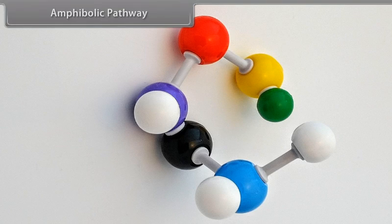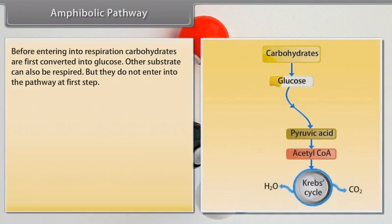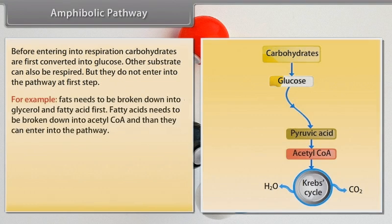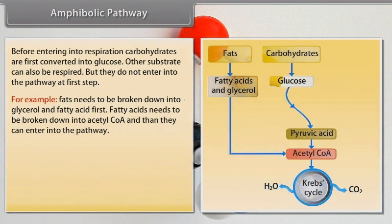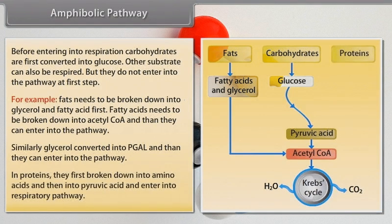Generally, carbohydrates are used as substrates for respiration. Before entering into respiration, carbohydrates are first converted into glucose. Other substrates can also be respired, but they do not enter the pathway at the first step. For example, fats need to be broken down into glycerol and fatty acids first. Fatty acids need to be broken down into acetyl CoA and then they can enter the pathway. Glycerol is converted into PGAL and then it can enter the pathway. Proteins first break down into amino acids and then into pyruvic acid before entering the respiratory pathway.